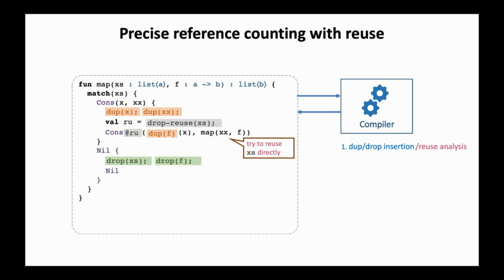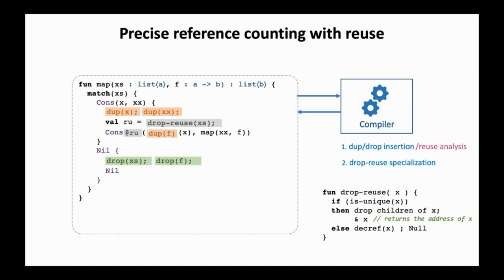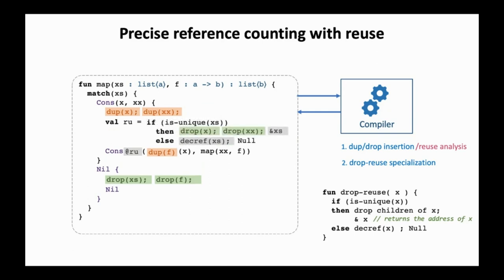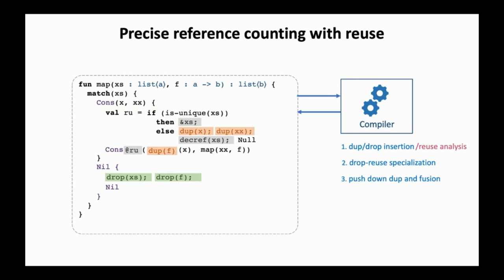The cons at reuse token annotation means that at runtime, if this reuse token is not null, then we can reuse it directly instead of allocating fresh memory for the cons node. Just like drop specialization, we can now perform drop reuse specialization. Recall the definition of drop. In drop reuse, instead of freeing X, we will return the address of X. After drop reuse specialization, we will get code like this. And like before, we can now push down the dumps and fuse the dump-drop pairs. We end up with this code. Note that in the first path where XS is uniquely owned, there are no more reference counting operations at all. Furthermore, the memory of XS is directly reused to provide the memory for the cons node for this returned list.